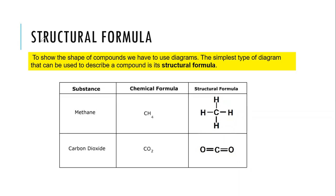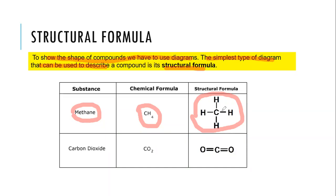To show the shape of compounds, we have to use diagrams. The simplest type is structural formula. For example, for methane — a flammable gas — the chemical formula is CH4, and the structural formula shows how atoms connect. It comes from the Lewis diagram; these lines represent the bonds. For carbon dioxide CO2, you can see the double covalent bonds. In structural formula, we don't show the lone pairs of electrons — that's different from the Lewis diagram.